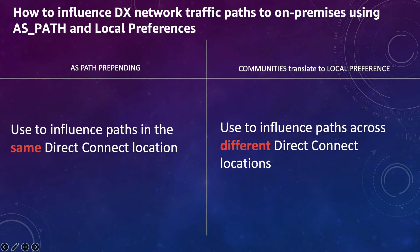One thing to keep in mind: if you have two connections within the same location, AWS recommends you use AS path. If you have two connections across two different locations, you should use BGP communities. I'll cover both in my scenarios.